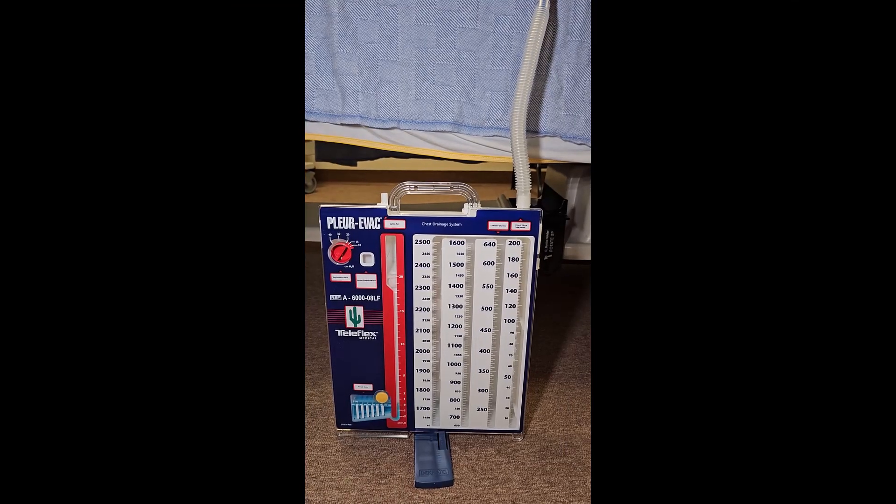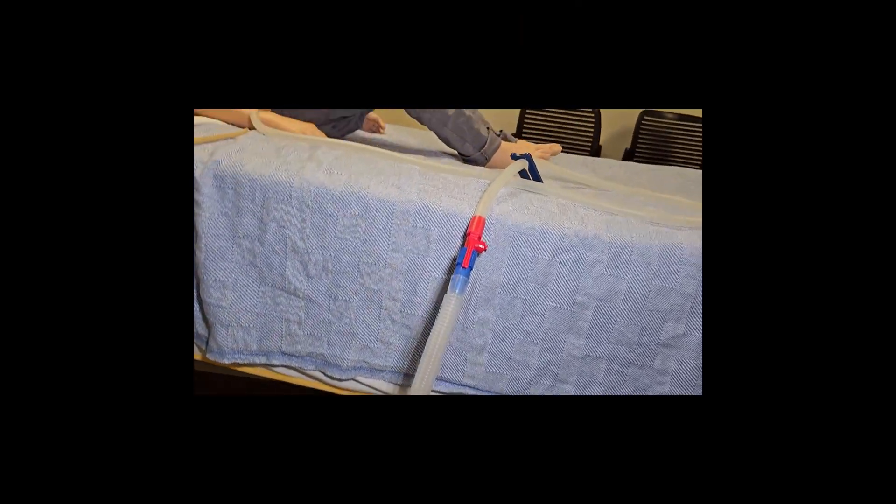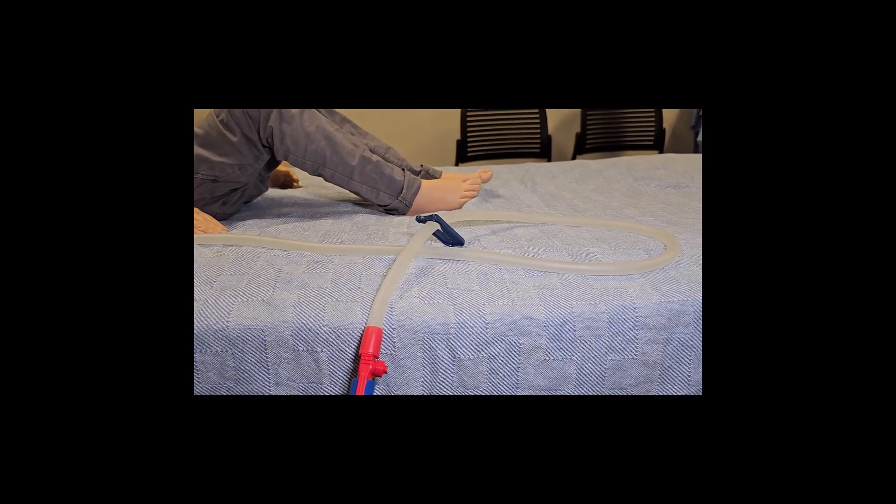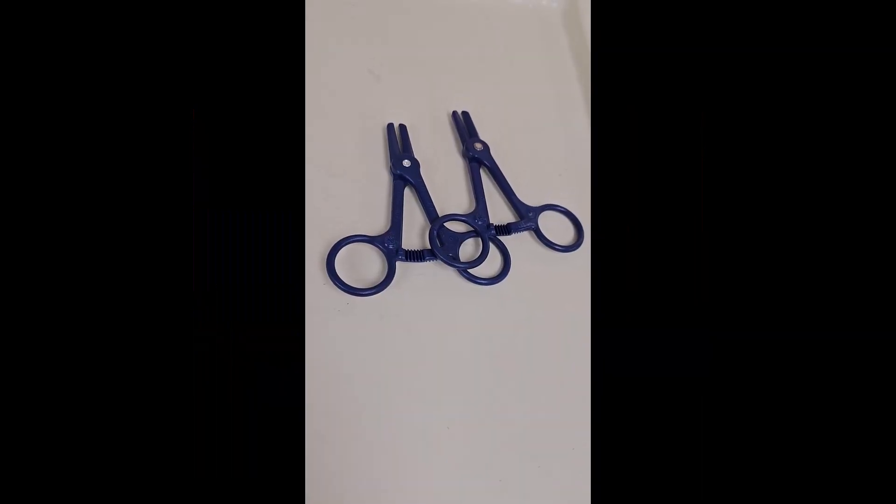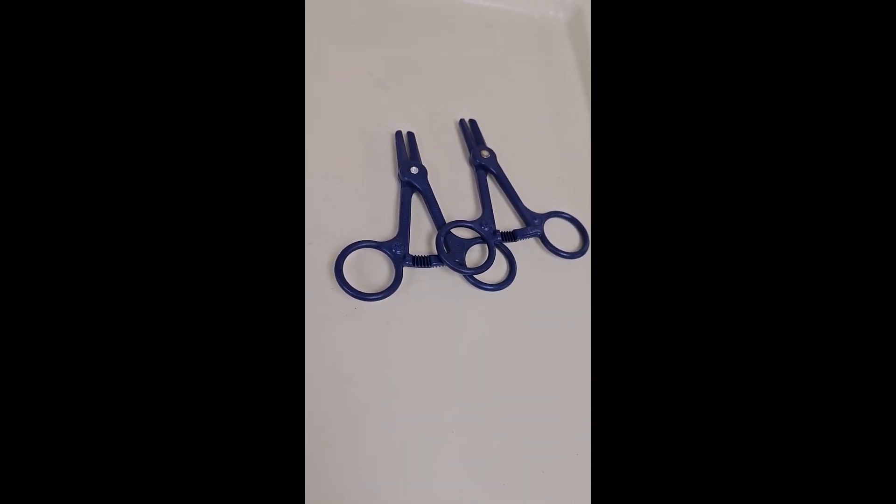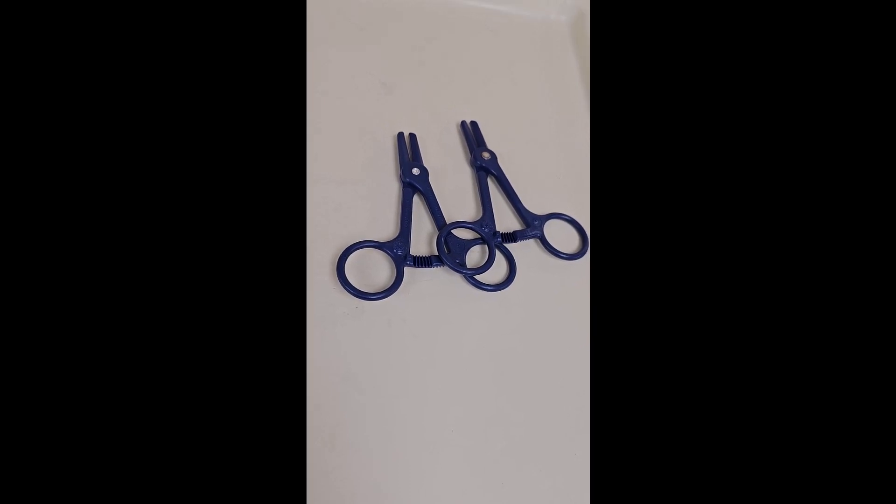And a couple of final tips: make sure your tubing is up on the bed so you don't end up with dependent loops, and always keep a pair of toothless clamps at the bedside as part of your safety equipment.